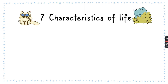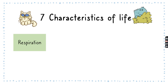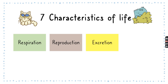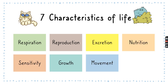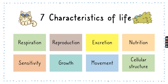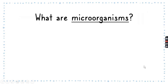So if we recall these seven characteristics of life, we remember MRS GREN — one of them is respiration, we have reproduction, excretion, nutrition, sensitivity, growth, and movement. And lastly, we wanted to add cellular structure. So all living things or all things that are alive have a cellular structure, so we do consider microorganisms or anything that has a cell as a living thing.